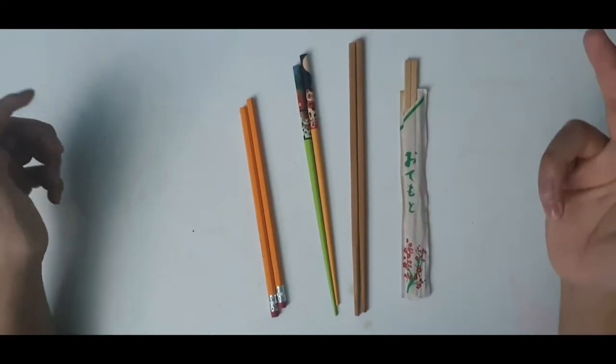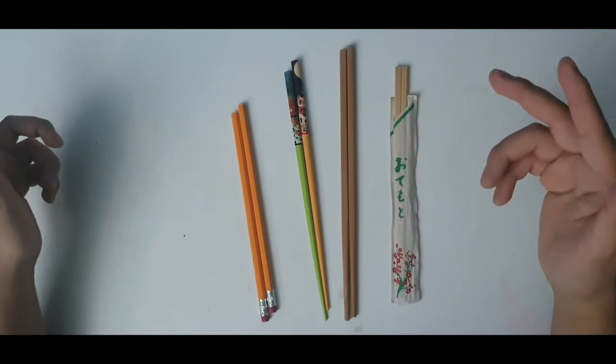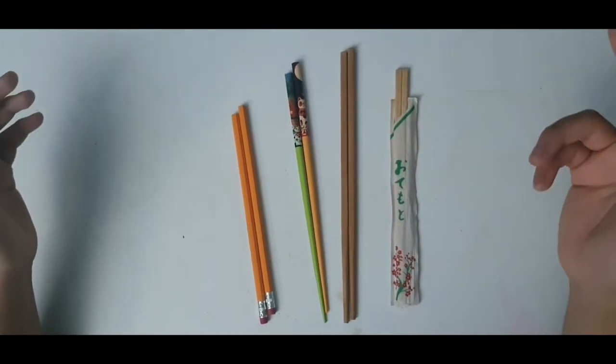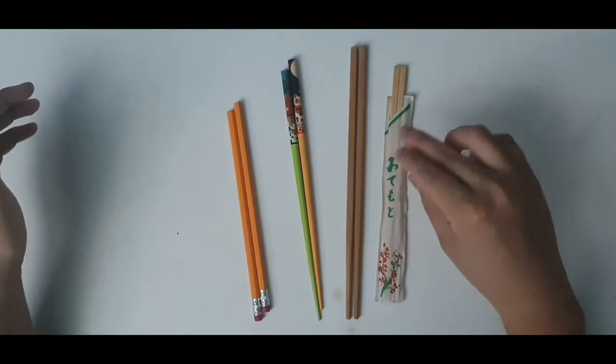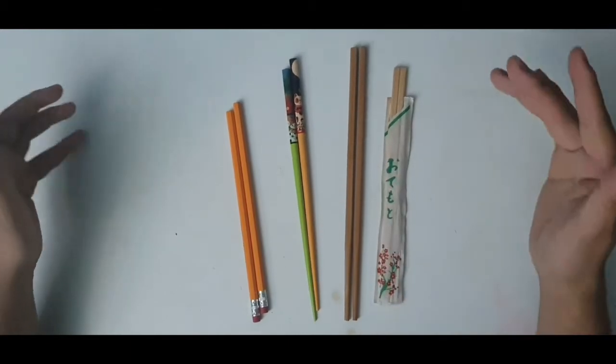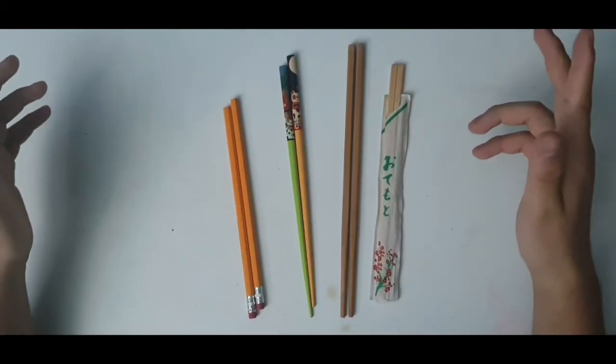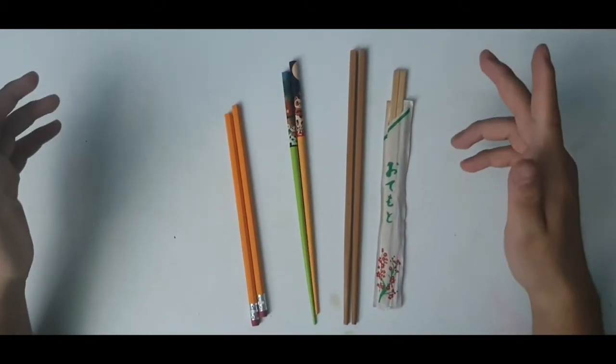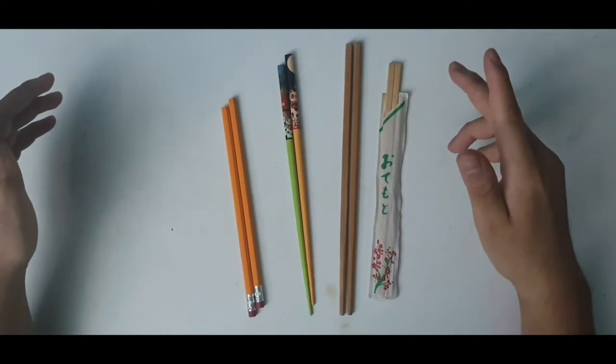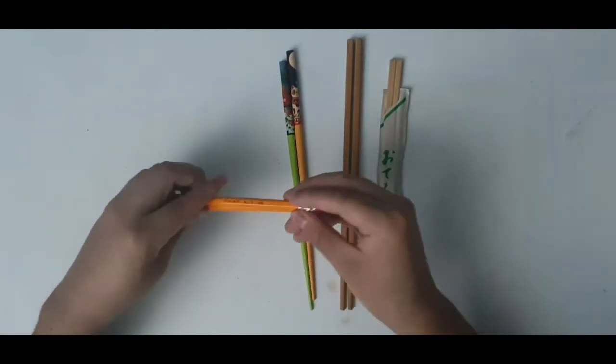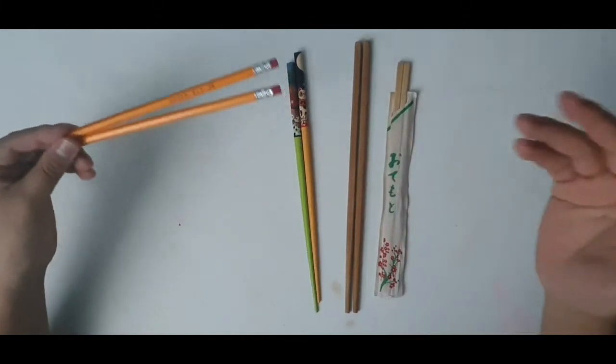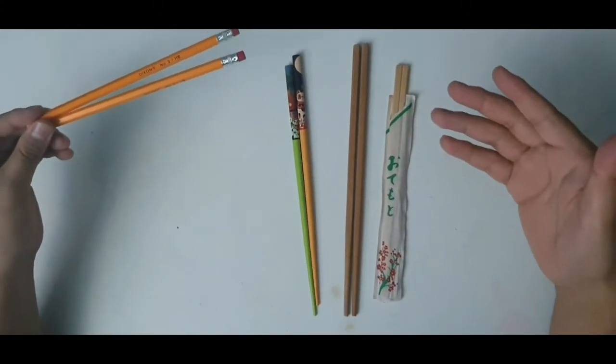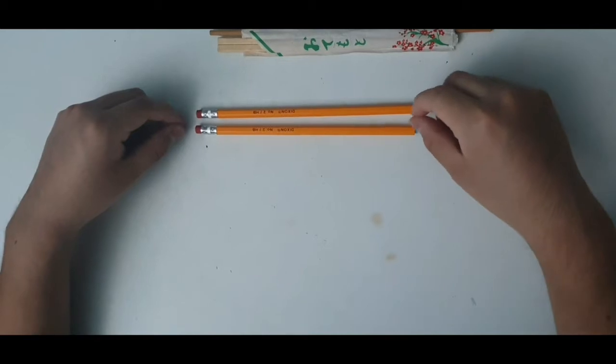So chopsticks come in all sizes and are made from different materials. For example, we have our wooden ones right here, we have plastic ones, and unfortunately I don't have the metal chopsticks. But for today's episode, we're going to be using our number two pencils as chopsticks if you don't have a pair of chopsticks like I do.